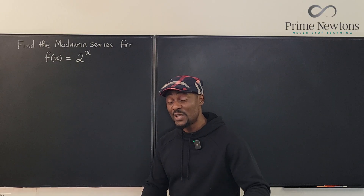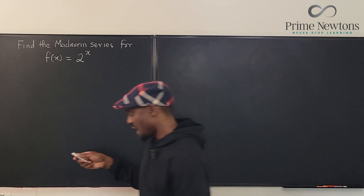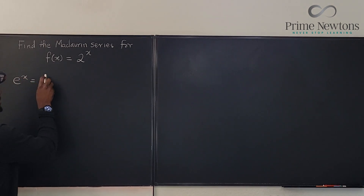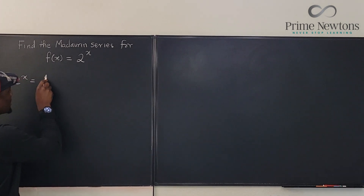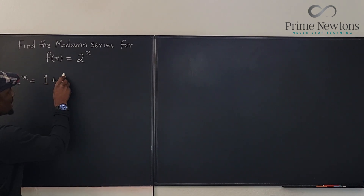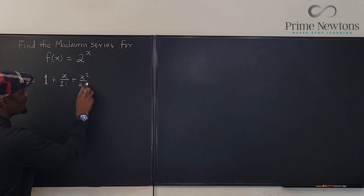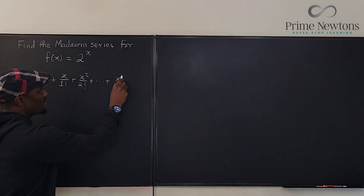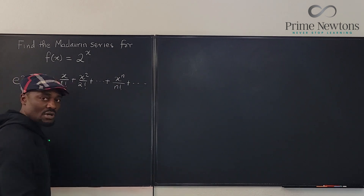So the first thing I'm going to do is talk about e to the x. We know that e to the x is one plus x over one factorial plus x squared over two factorial plus you just keep going like that. So every time it is x to the n over n factorial and you keep going.